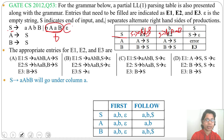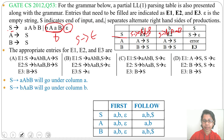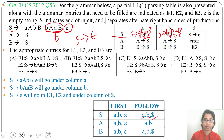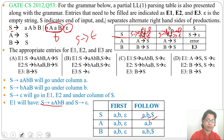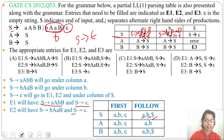There is also an epsilon production S → epsilon. For epsilon productions, we write the entry in the FOLLOW of S columns. FOLLOW(S) = {A, B, dollar}, so we write S → epsilon in the A column, B column, and dollar column. Therefore, E1 contains both S → AABB and S → epsilon, and E2 contains both S → BAAB and S → epsilon.